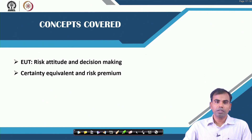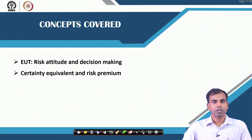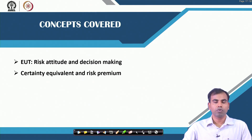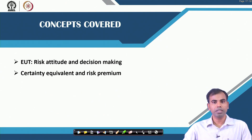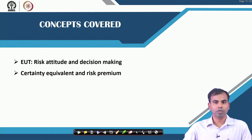So far we have learned that our decisions, where economic payoffs are associated, are based on the utility derived from those payoffs. For example, if you have an investment that is going to yield different payoffs with different probabilities, we would try to understand what should be our expected payoff from those outcomes, and based on that we take our decisions.